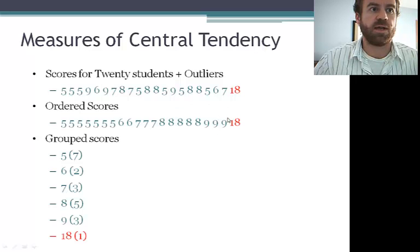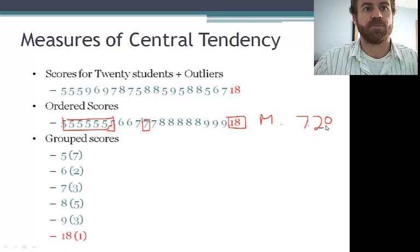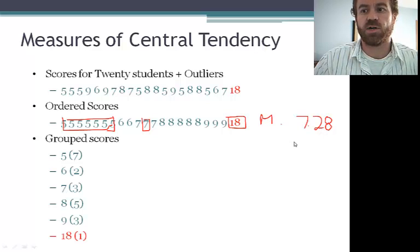So what does this outlier do to our scores? Well, the mode is still 5. We still have more 5s than any other numbers. And our median is still 7. Now we have 21 numbers and our middle number is still 7. So the mode and the median have stayed the same. But the mean, when we calculate all the scores together, we sum them and take the average. In this case, we get a mean of 7.28. So of the three measures of central tendency, the mean is always the measure that is most affected by outliers.